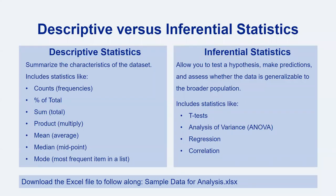You'll often hear people discuss descriptive and inferential statistics. Descriptive statistics are just that — they are used to describe and summarize your dataset. They include things like counts or frequencies, percent of total, sums or totals, products (which is the result of a multiplication), means (which are averages), median (which is the midpoint of a range), and mode (which is the most frequently occurring item in a range).